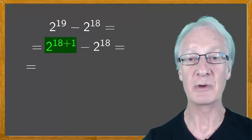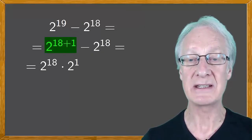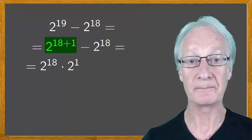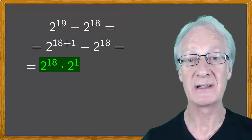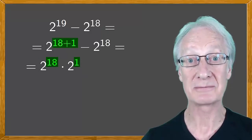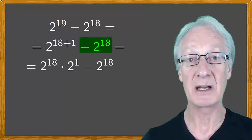The first term we could write as 2 to the 18 times 2 to the 1, because when there are powers of the same base, we just add the exponents. And again, minus 2 to the 18.